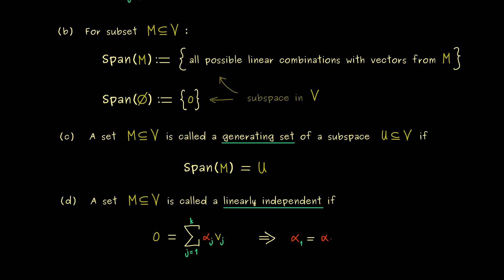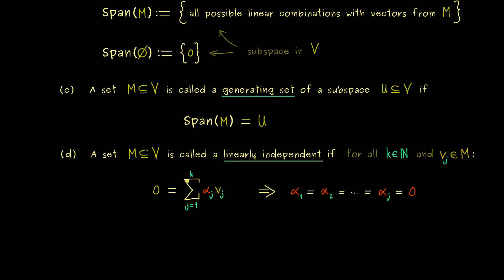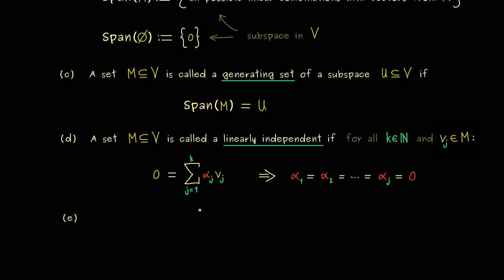Namely all the coefficients should be zero in this case. So you cannot combine vectors in a non-trivial way to reach the zero vector. And as before here it does not matter how big you choose your natural number k. So please note in this definition here the set M does not have to be finite. But still we check all the possible finite linear combinations in this implication.